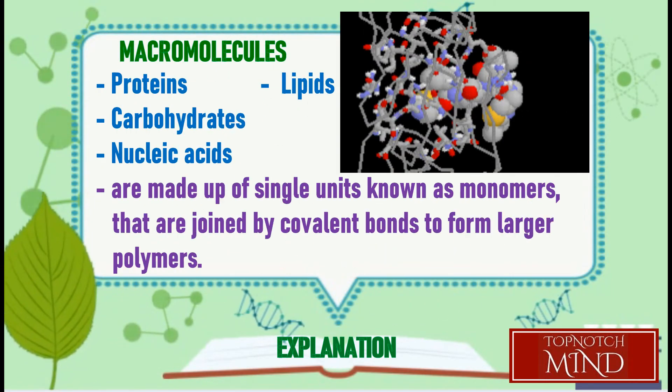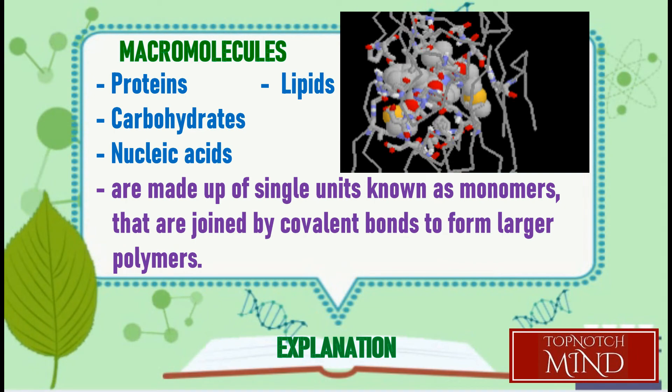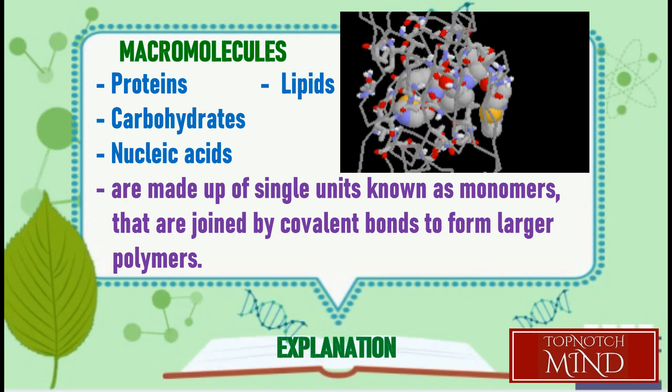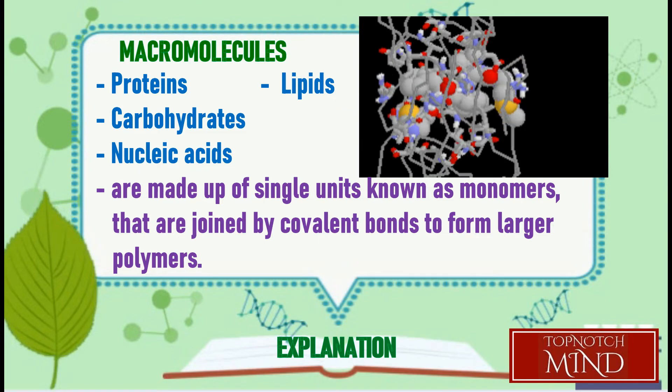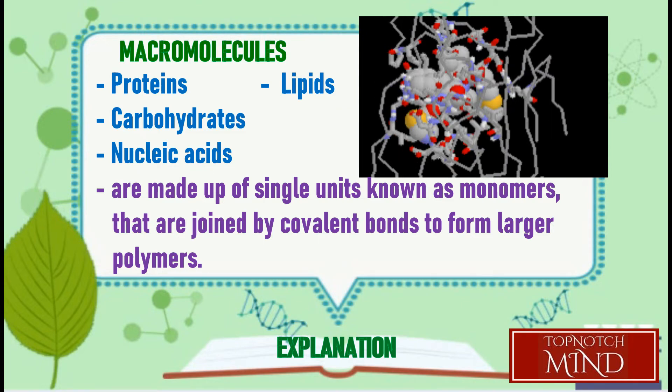A covalent bond involves electrons being shared between atoms. These electrons are shared between two nonmetals. Biological macromolecules, such as proteins, carbohydrates, nucleic acids, and lipids, are made up of single units known as monomers that are joined by covalent bonds to form larger polymers.